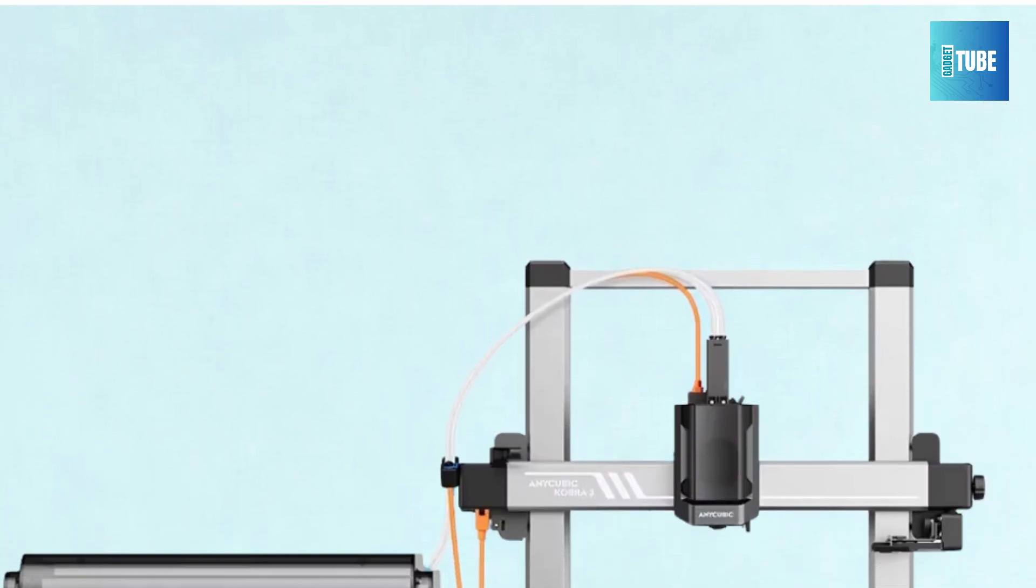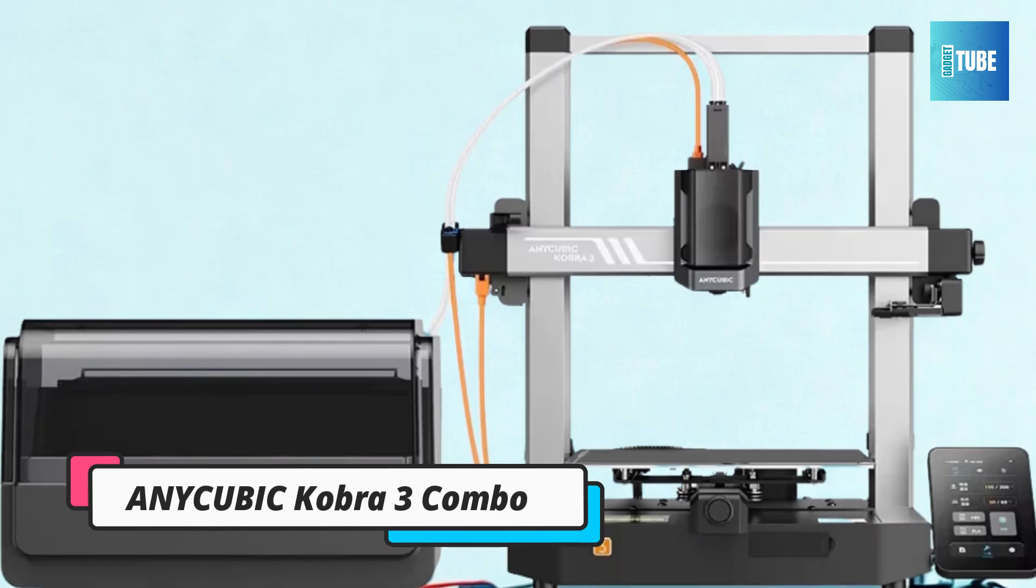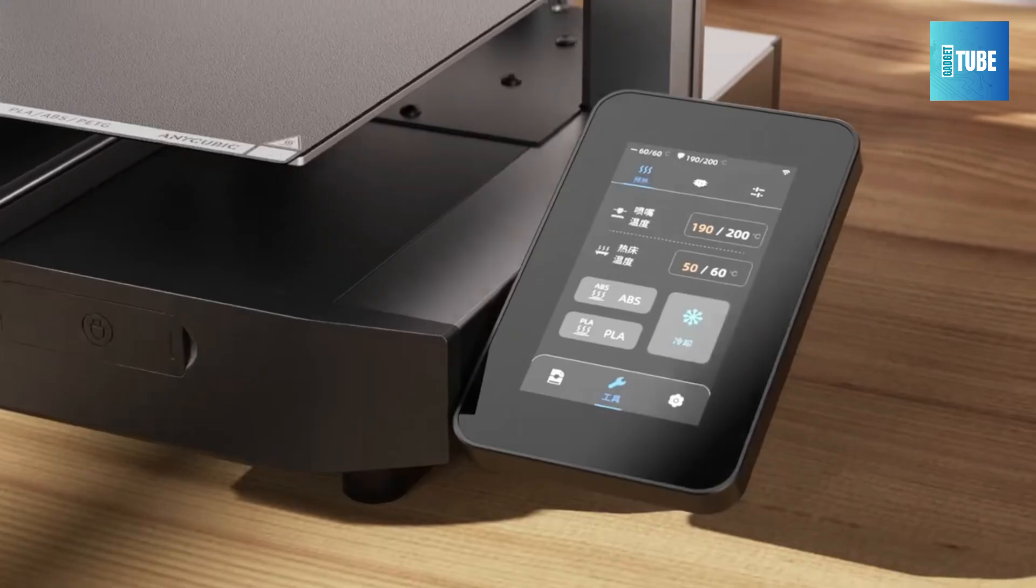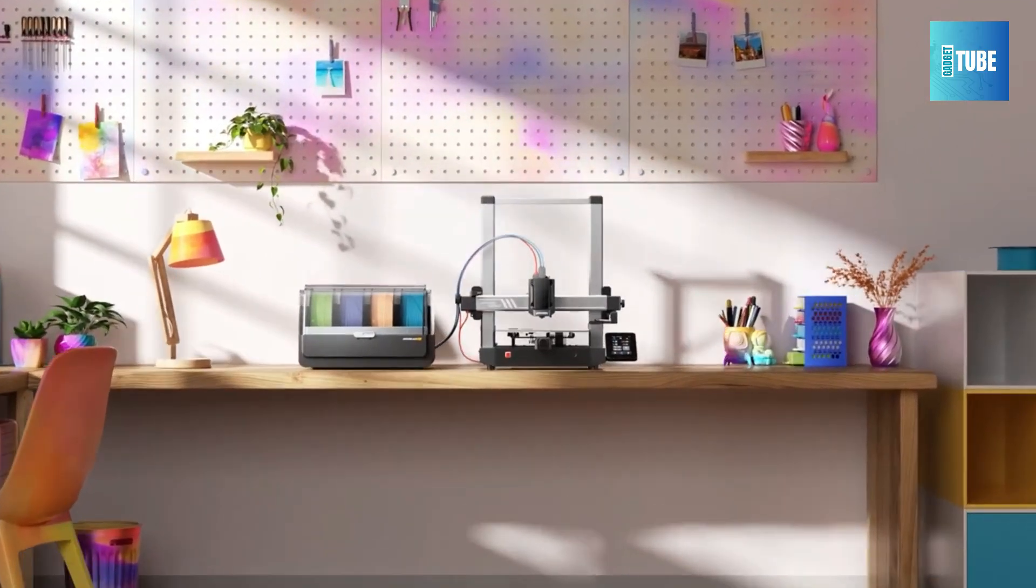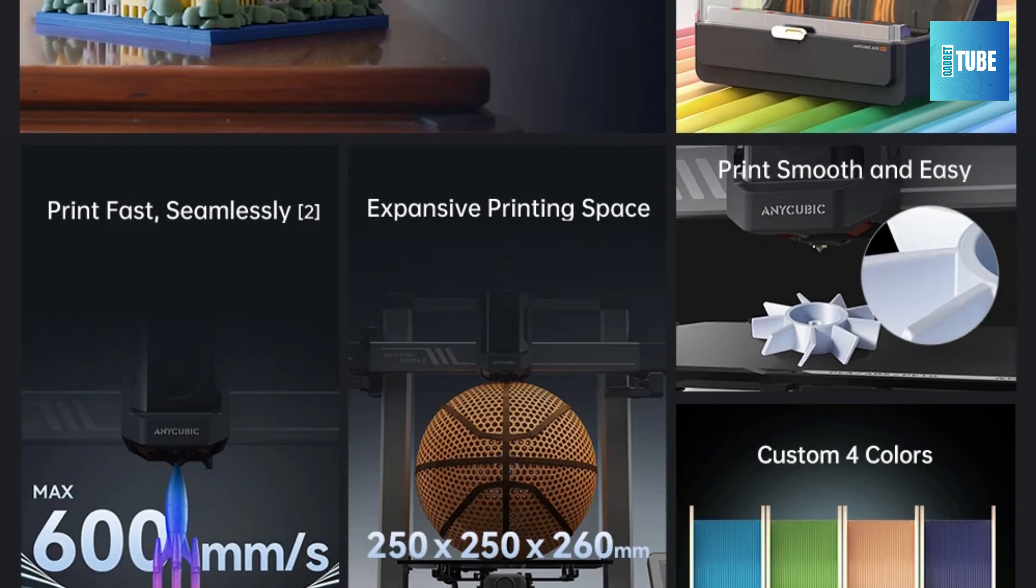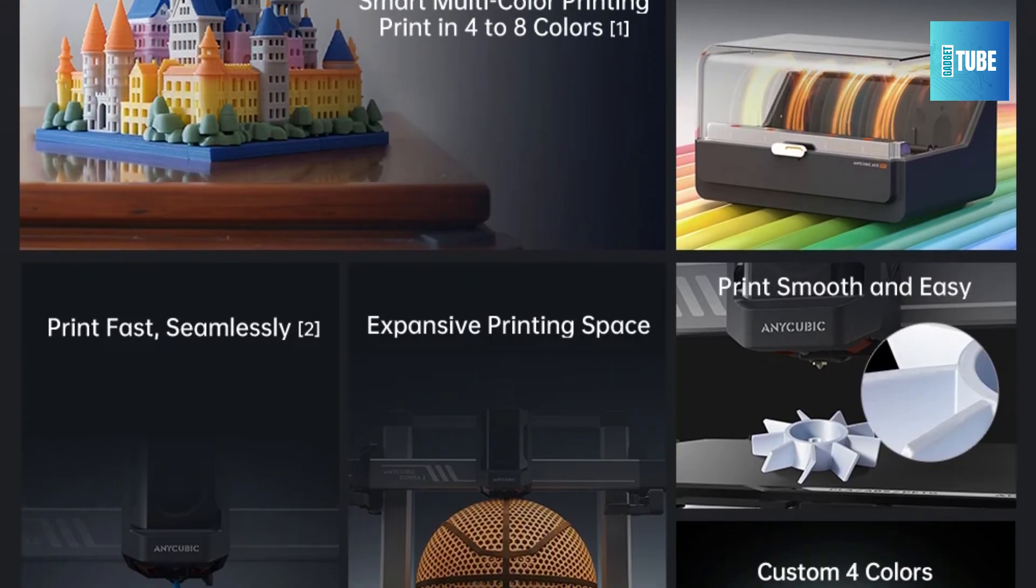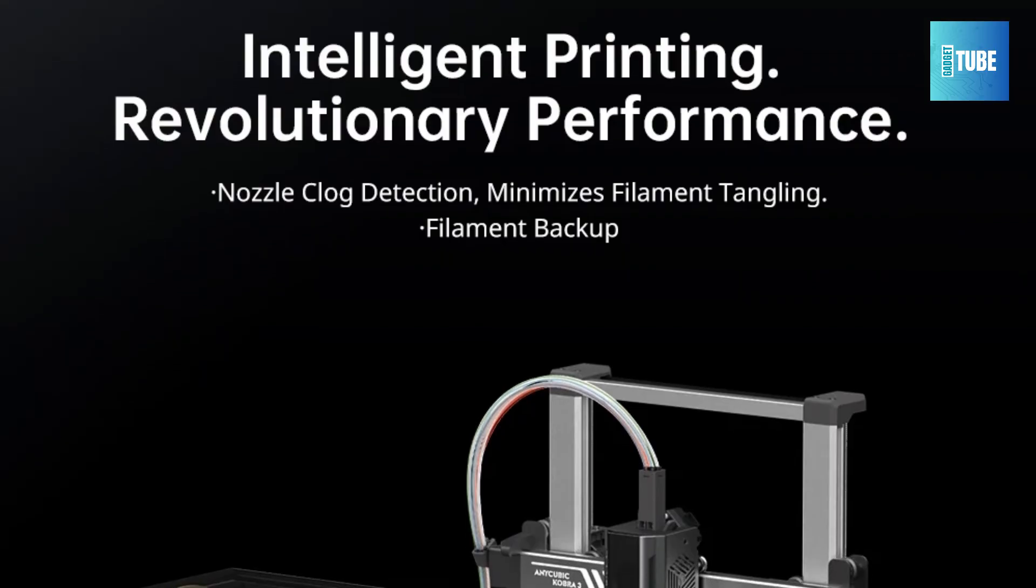Number 4. Anycubic Cobra 3 Combo 3D Printer. The Anycubic Cobra 3 Combo, a high-speed, multicolor FDM 3D printer perfect for DIY creators and home innovators. With a blazing-fast maximum print speed of 600mm per second, it brings efficiency and detail together in one machine.